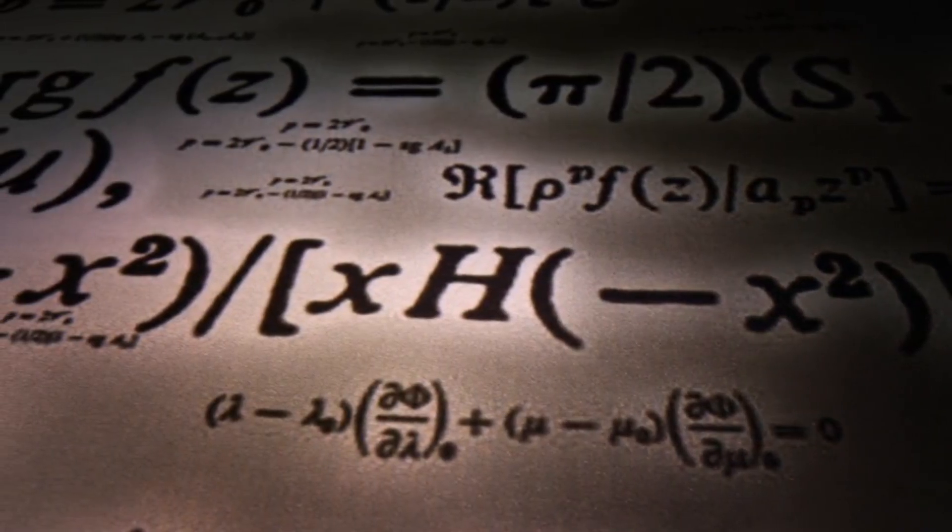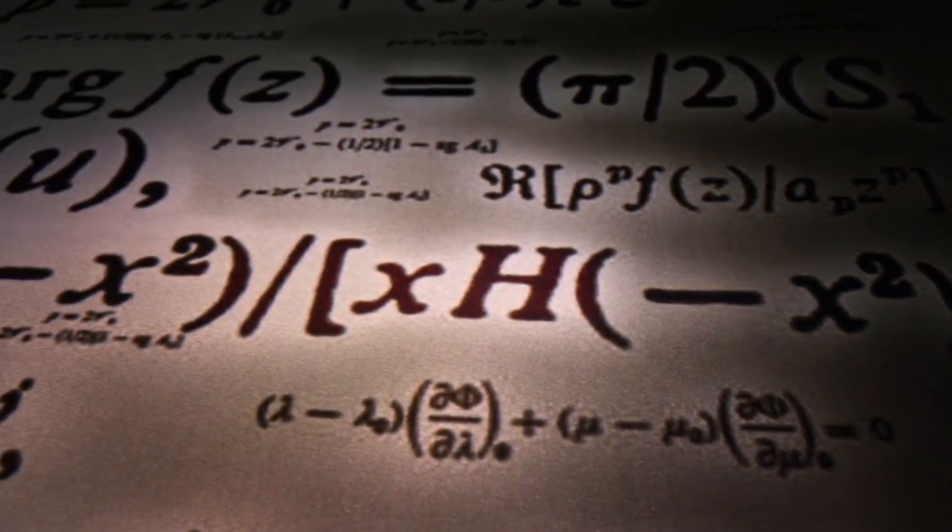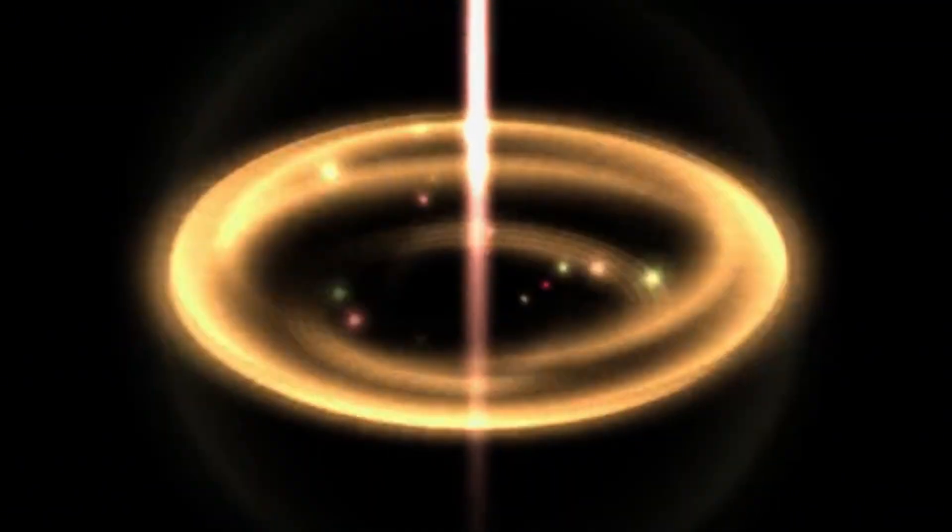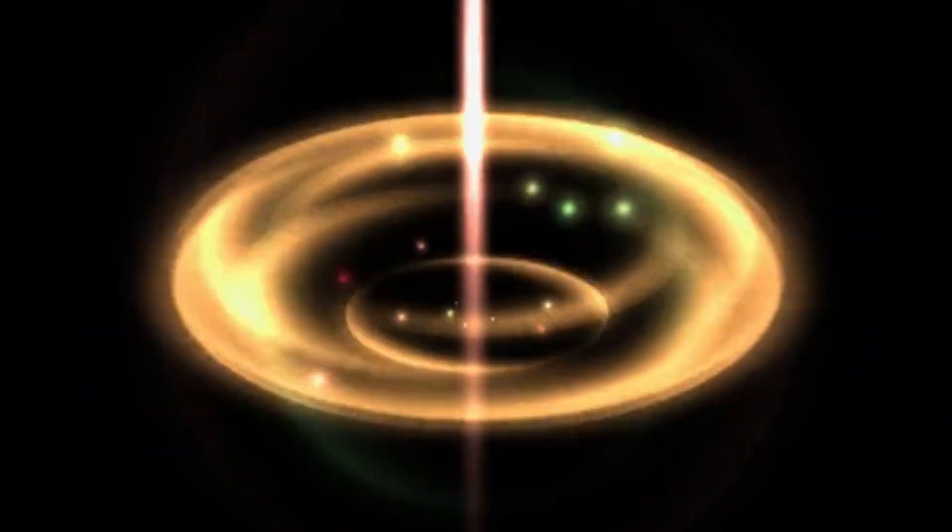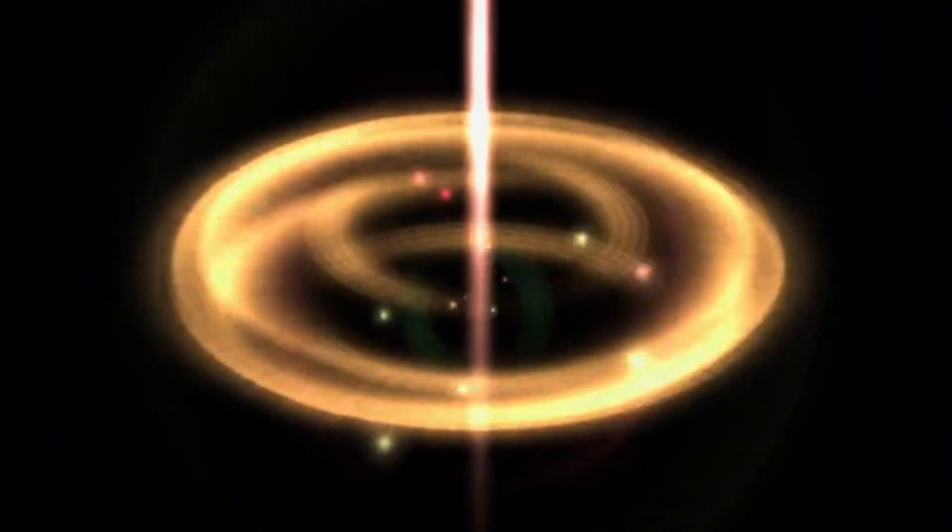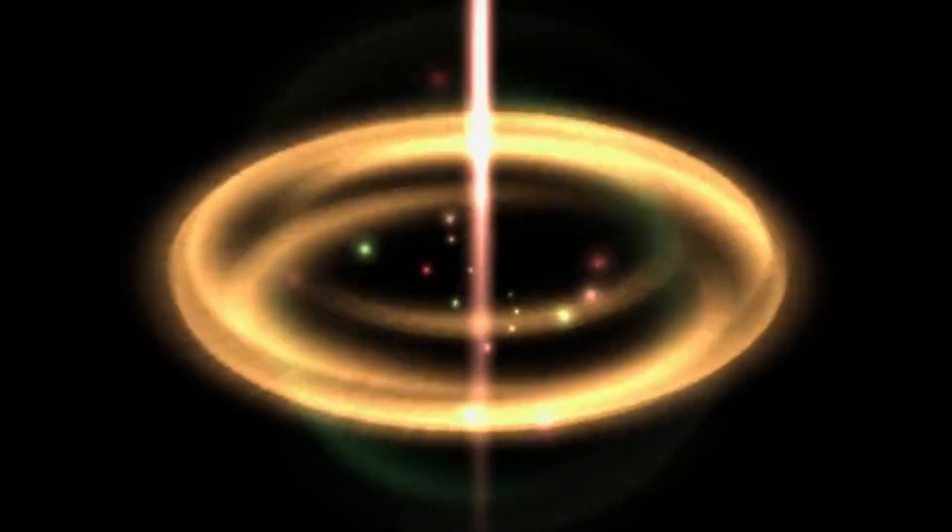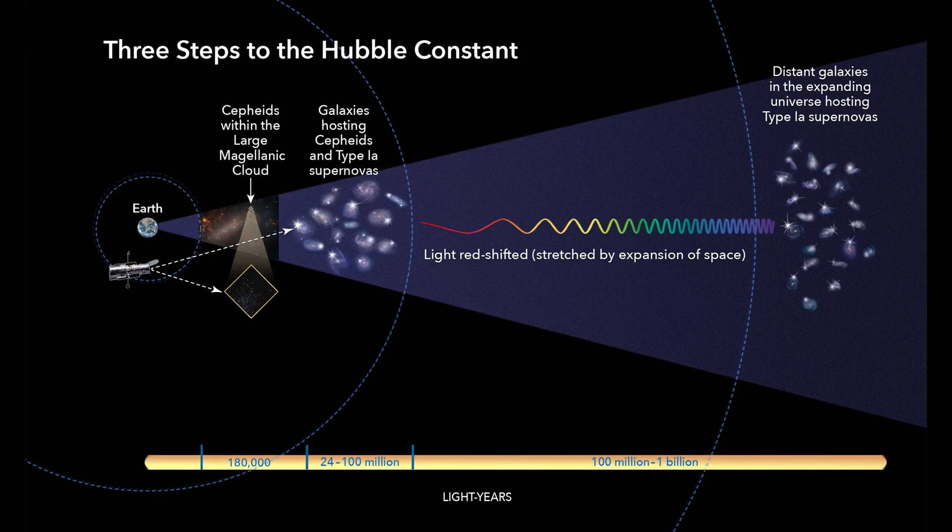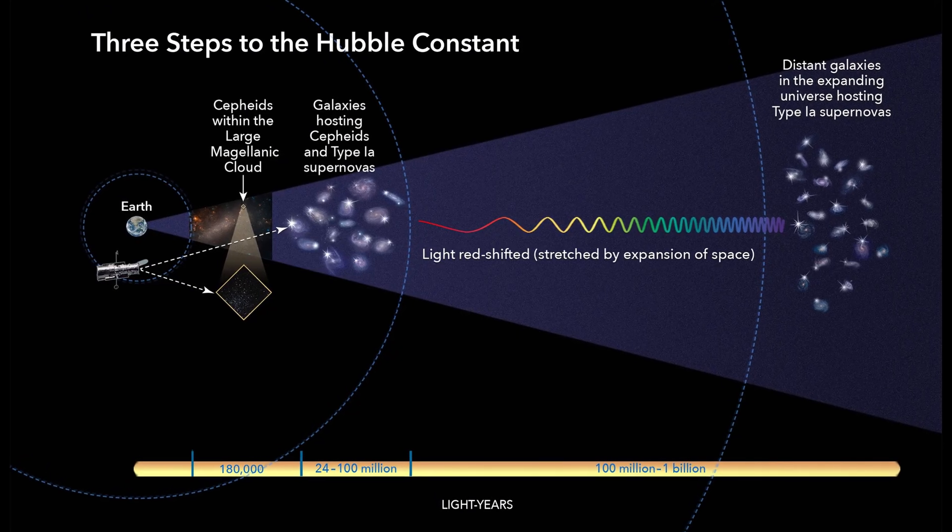In this limit, photons embody pure space-time geometry: no temporal evolution, no spatial extension along their path. Lab experiments measuring photon properties and observations of ancient galactic light confirm relativity's predictions across cosmic distances.